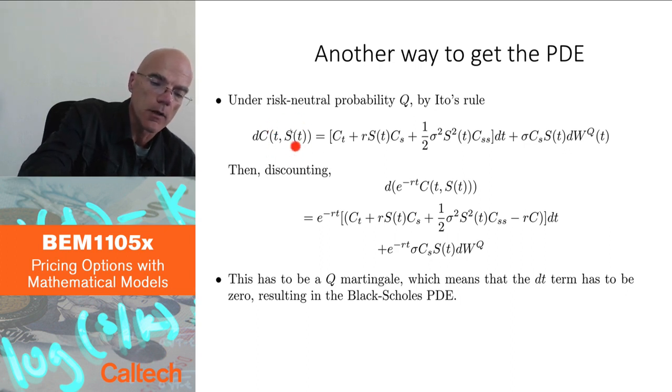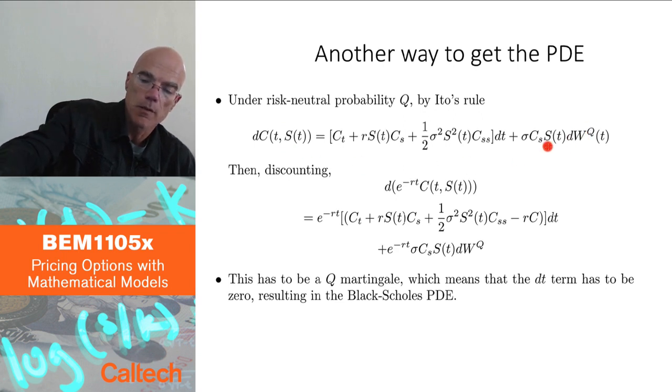The option price is going to be a function of t and s of t if you are talking about European path independent payoffs. And I'm going to use Ito's rule on the option price, but under w_Q, which means it's going to look exactly the same as Ito's rule under w, under P, except I'm going to replace mu by r and I'm going to write w superscript Q instead of w. We had this already, that was how we started deriving the Black-Scholes partial differential equation, but this is just Ito.